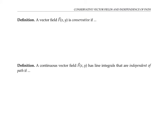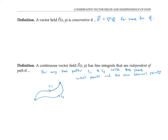Recall that a vector field F is called conservative if F can be written as the gradient of some function phi, called a potential function. A continuous vector field F is said to have line integrals that are independent of path if whenever you have two paths, C1 and C2, that start at the same place and end at the same place, the line integral of F·dr over C1 equals the line integral over C2. In other words, it doesn't matter what path you take from point A to point B — the line integral will be the same regardless. The continuity condition on the vector field is included so that these line integrals make sense.